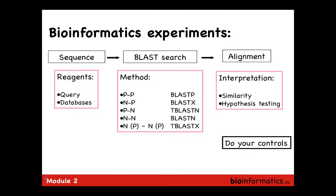What's an example of a control for a bioinformatics experiment using BLAST? A positive control would be: if you know a sequence exists in a database, you'd want to make sure you can find it. If you know the reference is in the database and you can't find it using BLAST, that means you're using the wrong parameters or doing something wrong. Likewise, a negative control is when you know something is not there and you don't want to find anything. Is it not there, or is your method wrong? You have to think about those things.